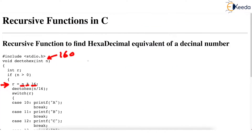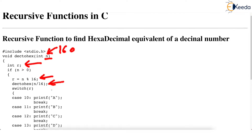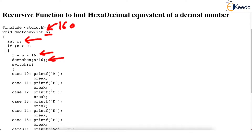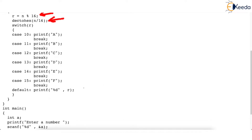Let's go to the body of this recursive function. We have declared variable R to record the remainder, and this is the recursive call with N divided by 16. Then we have a switch statement to check the value of R: if it is 10, print A; if 11, print B; and so on up to 15, print F. If it is none of 10 to 15, go to default and print the remainder as it is. This is the end of switch, the end of if, and the end of the function.